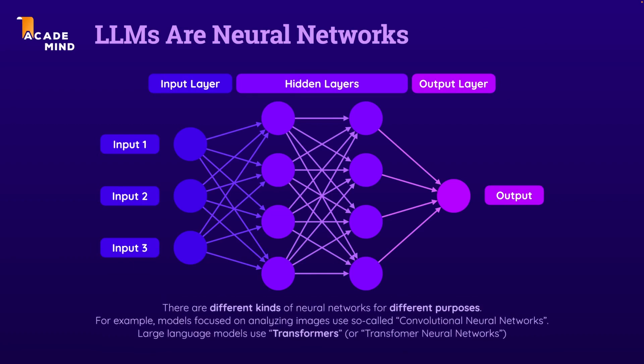There are different kinds of neural networks for different purposes. For example, if you would be training some AI model for working with images, you would often work with so-called convolutional neural networks. But for working with text, the state-of-the-art type of neural networks are so-called transformers, or transformer neural networks.